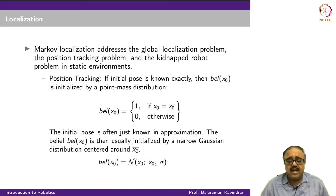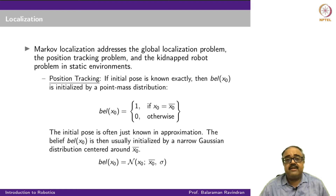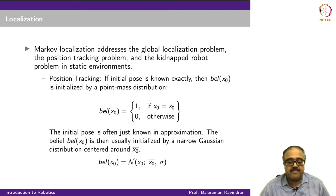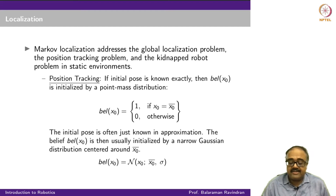The Markov localization algorithm can address any of the three local and global problems we talked about. The first is the global localization problem — we just say that the belief distribution is uniform. Or if it is the position tracking problem, we set the belief distribution to be something very, very focused.